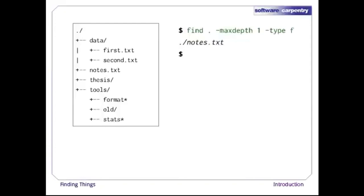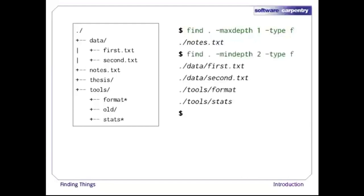If we don't want to go that deep, we can use -maxdepth to restrict the depth of search. Here, -maxdepth 1 tells find to only look at this level, so the only file it finds is ./notes.txt. The opposite of -maxdepth is -mindepth, which tells find to only report things that are at or below a certain depth. -mindepth 2 therefore finds all the files that are two or more levels below us.